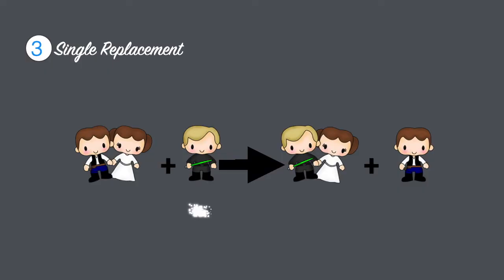Here you have single replacement. Let's say you have a couple dancing and one individual waiting to switch partners. Then they get their turn and dance with the new partner. In variable form, you can see it as AB plus C gives you AC plus B.